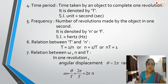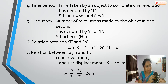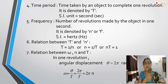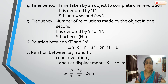Now some more important terms related to circular motion. The time period is the time taken by an object to complete one revolution, denoted by capital T, with SI unit seconds. For example, the tip of the minute hand completes one revolution in 60 seconds — so 60 seconds is the time period. The time period of the Earth around the Sun is 365 days.